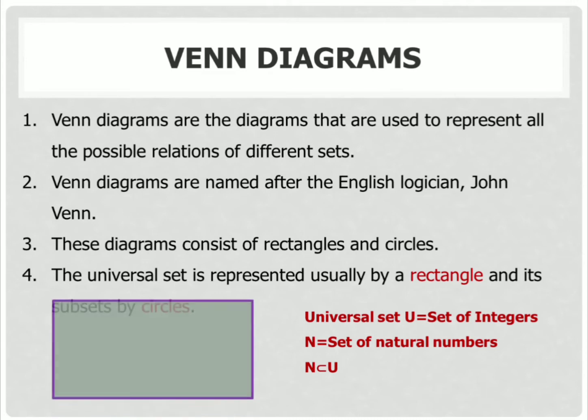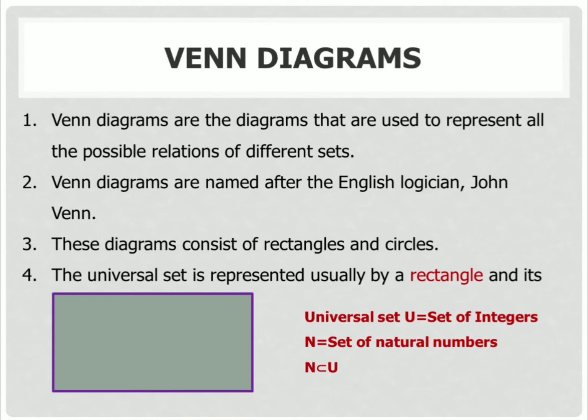Now, the universal set is represented by a rectangle — that means the set of integers is represented by a rectangle. And the set of natural numbers is represented by a circle. This is a simple Venn diagram.